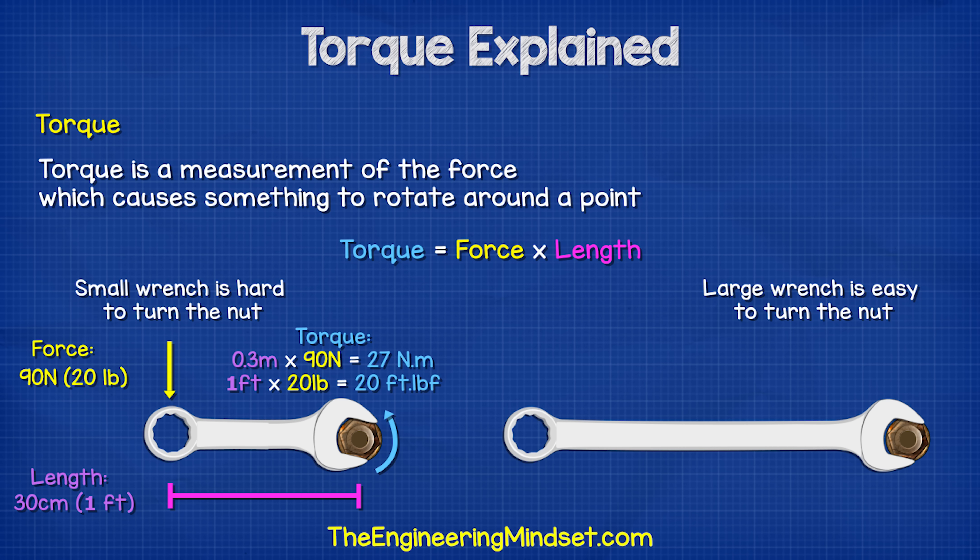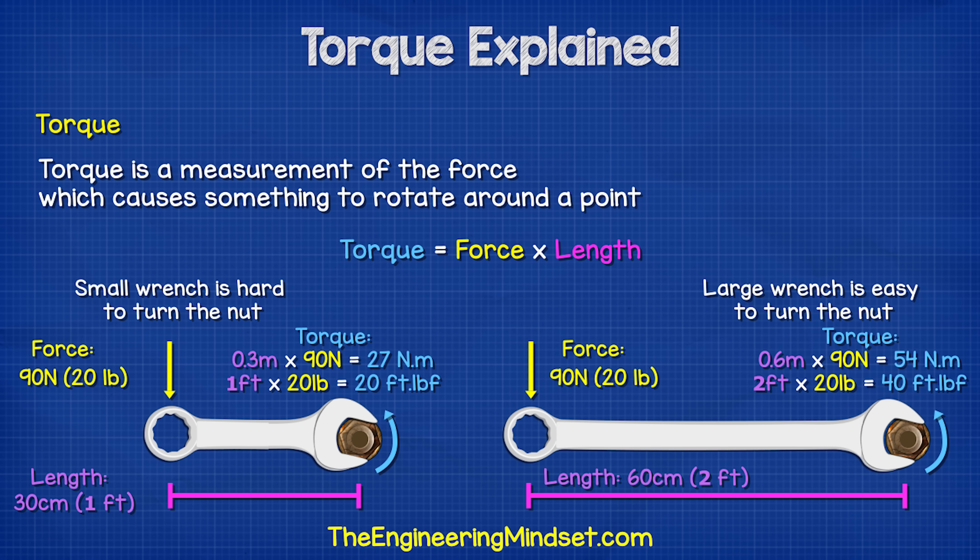However, if we applied the same 90N of force to a wrench that was 60cm long, then we would get 0.6m multiplied by 90N, which gives us 54Nm. So from this simple formula, you can see we have more force acting on the nut by using a longer wrench.